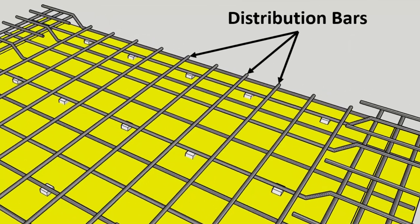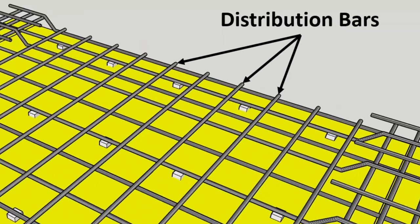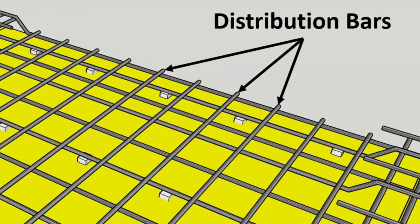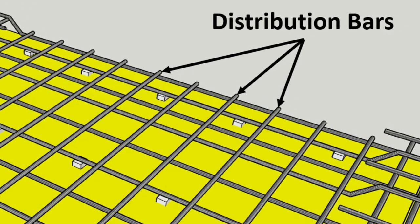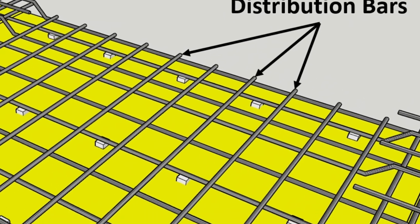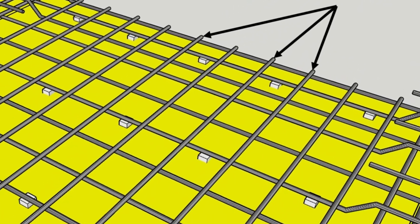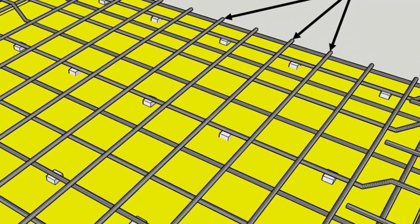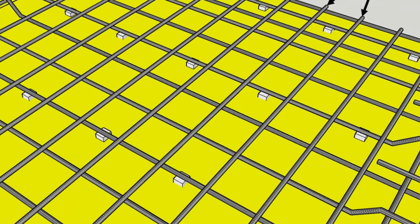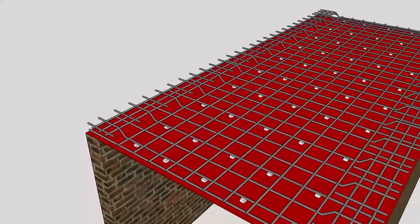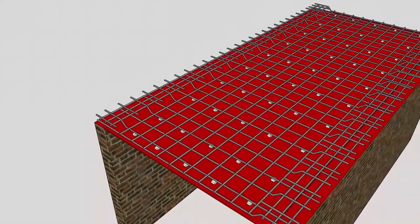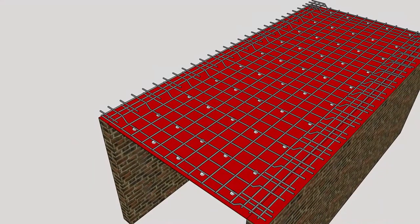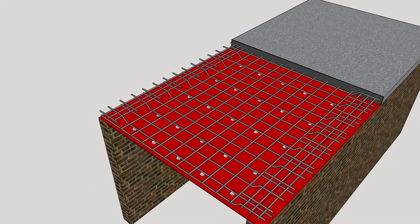Distribution bars are provided to take care of the secondary stresses arising in the longer span due to the effect of bending. Besides this, they also take care of temperature stresses, creep stresses, and shrinkage stresses. One of the key functions of these bars is to hold the main bars in position while concreting.